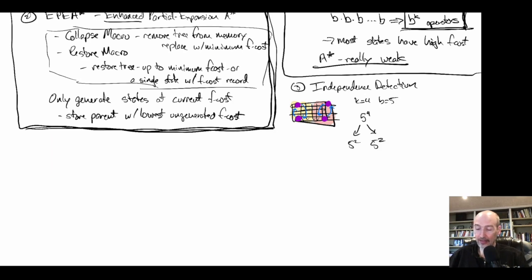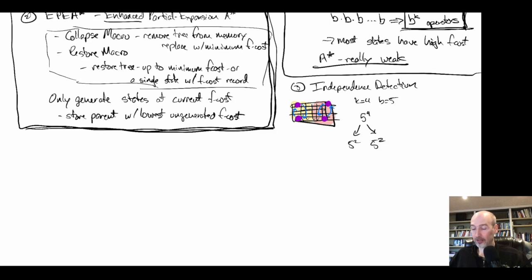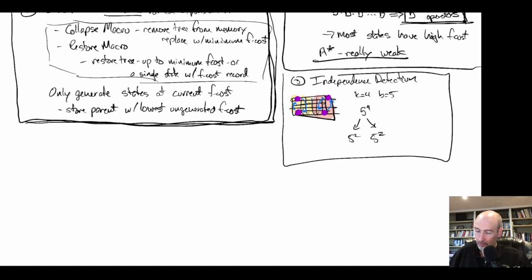Independence detection can be applied with any algorithm. We can solve each agent independently, check their solutions, and merge agents whose solutions overlap into a group. Agents whose solutions don't overlap stay in separate groups, creating subproblems that are exponentially smaller. It's a nice idea, but in the worst case it doesn't make the problem easier. It can be exploited when we get to one of the baseline algorithms used broadly.